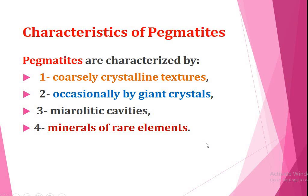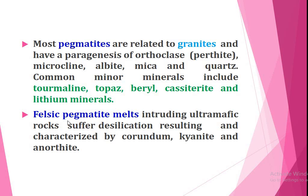These are the main characteristics of the pegmatite. Most pegmatites are related to granites and have a paragenesis of orthoclase, i.e. perthite, microcline, albite, mica and quartz. The common minerals include tourmaline, topaz, beryl, cassiterite and lithium minerals.